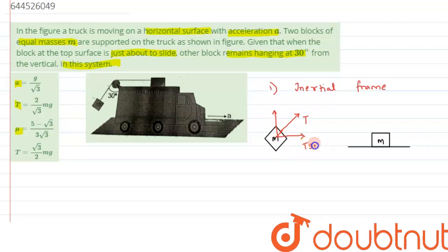Alright, so this component will be T sin 30. If this angle was 30 degrees, this angle will be 30. So this component will become T cos 30. And its weight will be acting in the downward direction as Mg. So this is what the FBD for the hanging mass is.